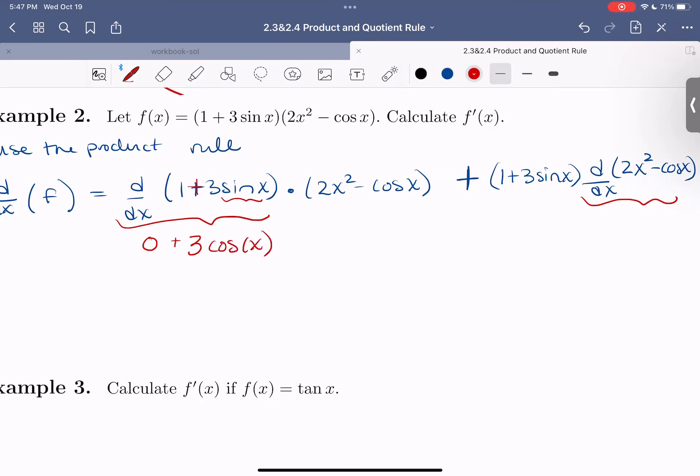Derivative of sine of x is cosine x. We saw that in the last part of the last video. So the 0 we don't need to include. We really just have 3cos(x) here.